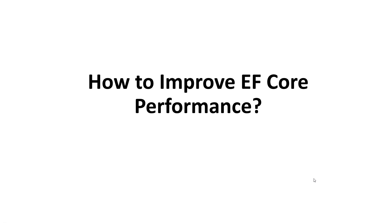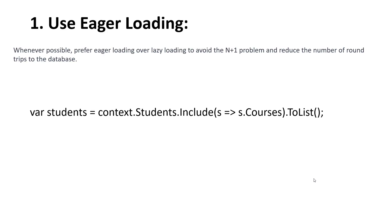Hello everyone, welcome to my channel ASP.NET Core. This video is about how to improve EF Core performance. The first tip is to use eager loading. Lazy loading has an N+1 problem, so whenever possible prefer eager loading over lazy loading to avoid the N+1 problem and reduce the number of round trips to the database. Use the Include keyword — for example, include courses when querying students.